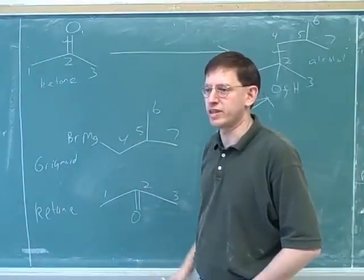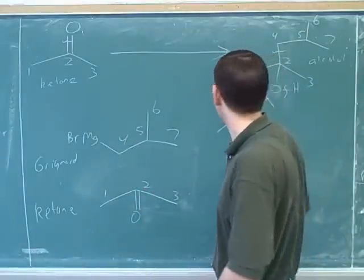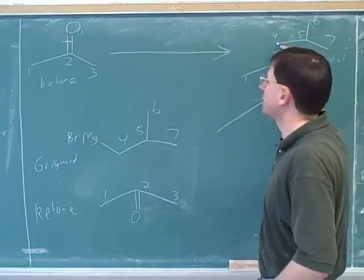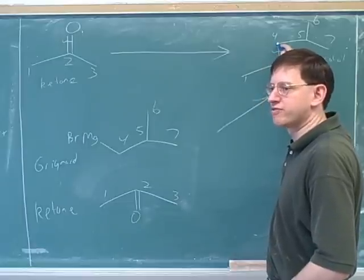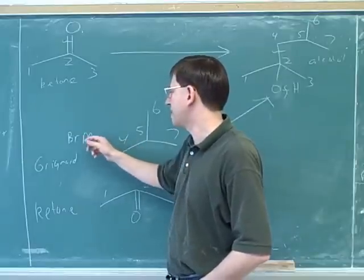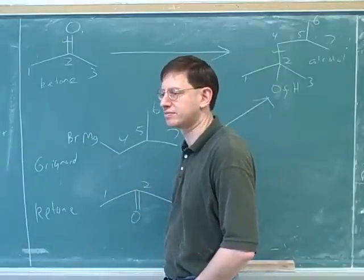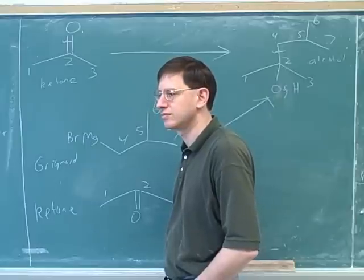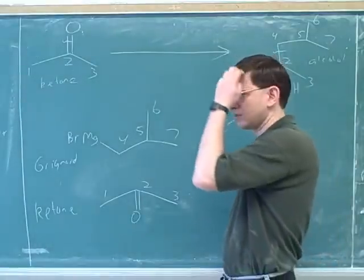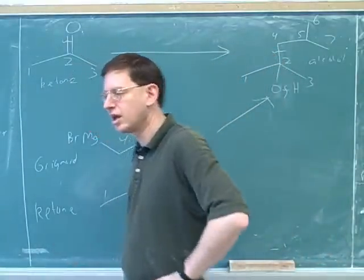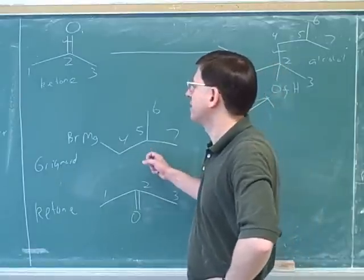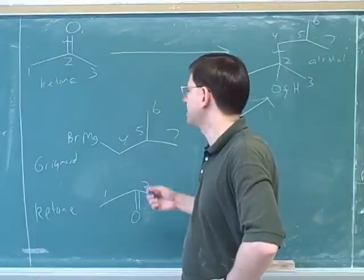Instead you have to think about the thought process that we went through. The thought process was: the number four carbon is going through a change here. So you have to ask, what did the number four look like before it turned into the product? Well, before it turned into the product, this was part of a Grignard, which means the number four was attached to the magnesium bromide. So it's important to see that there's no formula that we can memorize to get synthesis problems right. Instead, there's a thought process that we have to get comfortable with.